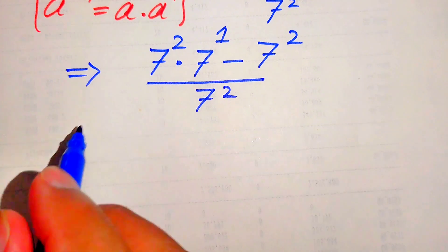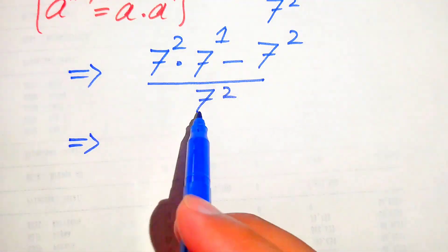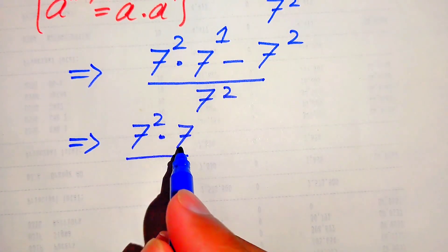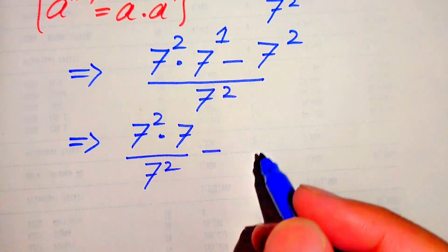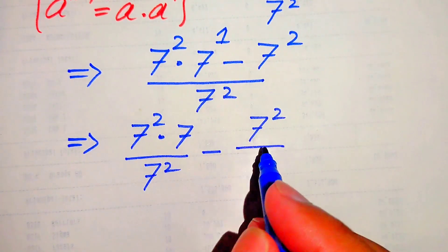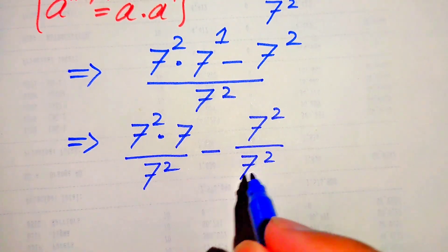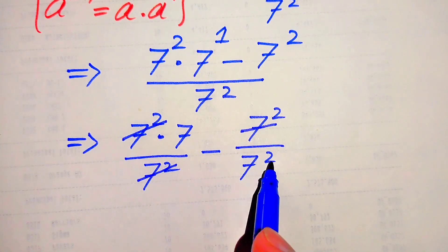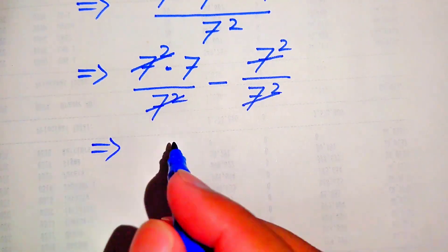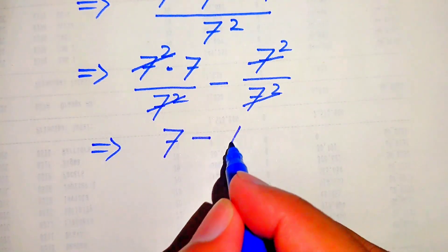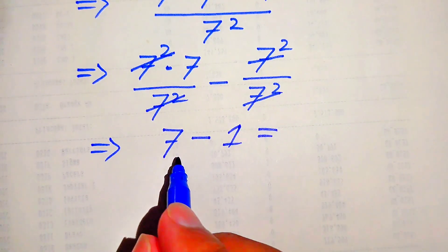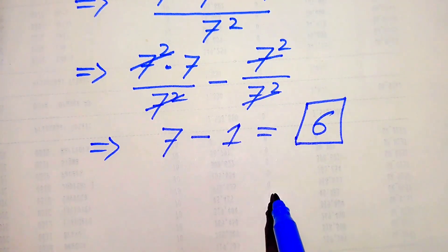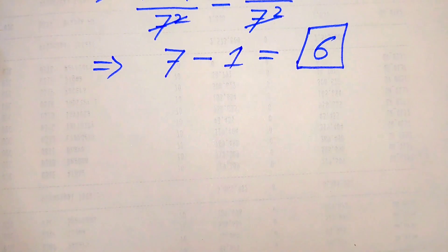In the next step we break this fraction, writing 7 squared separately on both values. It becomes 7 squared times 7 divided by 7 squared, minus 7 squared divided by 7 squared. The 7 squared cancels in both terms, giving us 7 minus 1. Subtracting gives 6, which is the final simplified form from the first method.